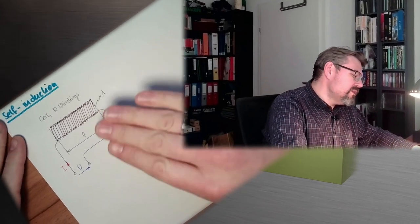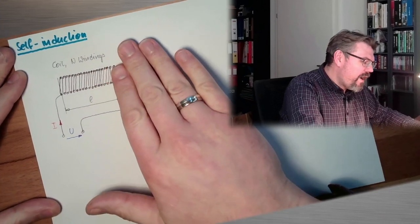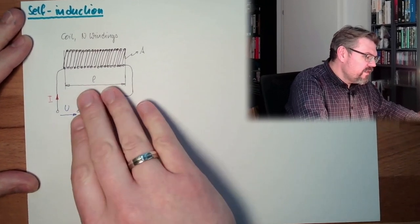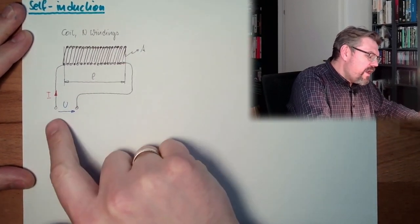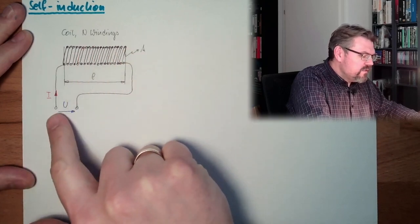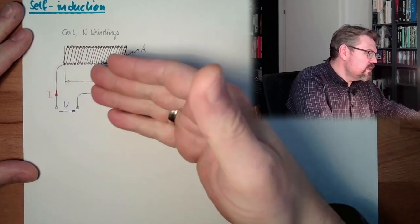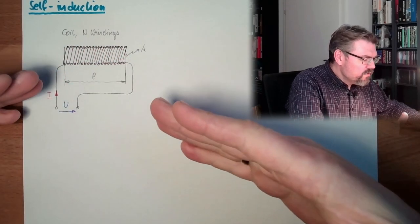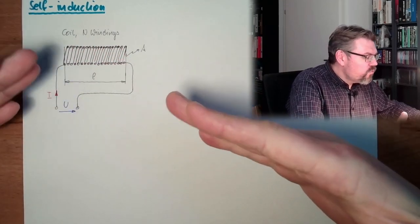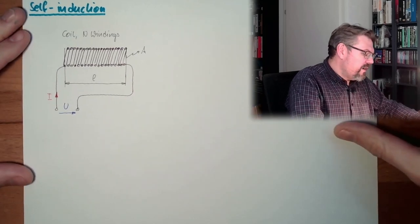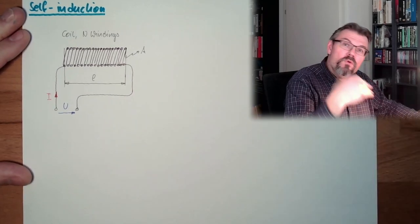So, we have a coil. Drawing this again, a coil with N windings. It has a certain length L, it has a certain area A, and we are now connecting this coil to a voltage. So a current is passing through, and we want to see how all those things turn out.